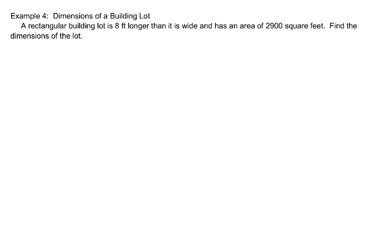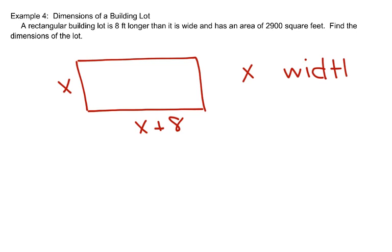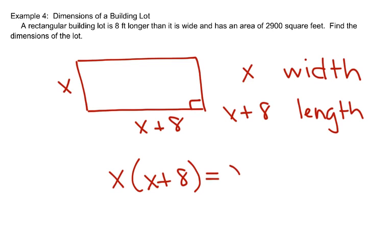In example 4, we want to find the dimensions of a building lot. A rectangular building lot is 8 feet longer than it is wide and has an area of 2,900 square feet. Find the dimensions of the lot. It's a rectangle. And it is 8 feet longer than it is wide. I don't know how wide it is, but I know however wide it is, it's 8 feet longer on its length. So, my variable X is going to be the width. So that X plus 8 is the length. And since I know the area is 2,900 square feet, length times width must equal 2,900. So, X times X plus 8 must equal 2,900.